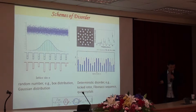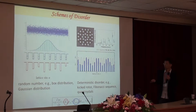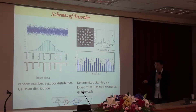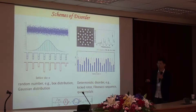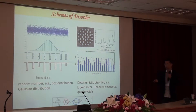In some sense, we can classify disorder into two kinds. One is the conventional scenario — for example, we can randomize the on-site potential or the hopping term, using a random parameter to describe the disorder. Another kind is deterministic disorder — for example, the Fibonacci sequence, quasicrystal, or similar structures.